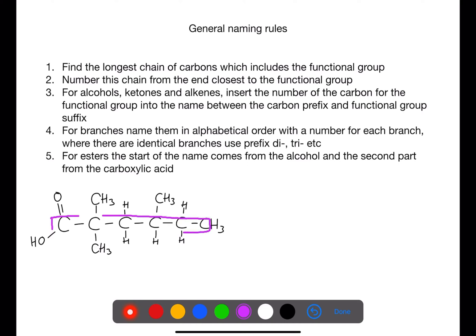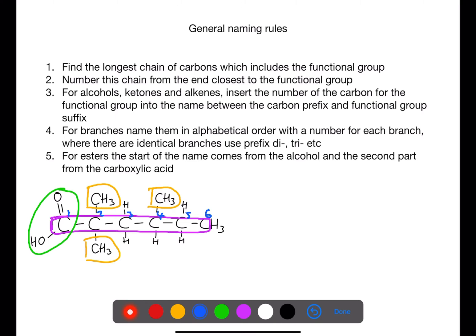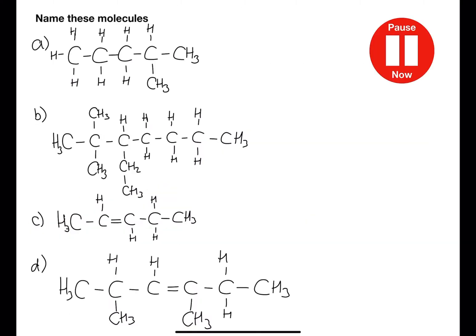Here's a second example. Here we have a carbon chain of six. On carbon number one we have a carboxylic acid functional group. On carbons two and four we have methyl groups, but this time we have multiple methyl groups. As these are all the same, we can use the prefix tri. We have to give a number for the location of each of the methyl groups, giving us 2,2,4-trimethylhexanoic acid. Pause the video now and name these alkenes.